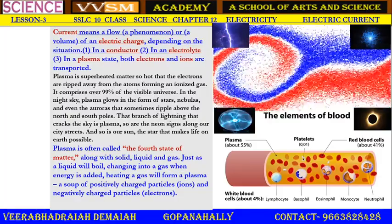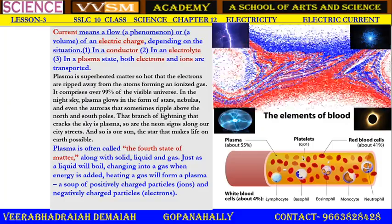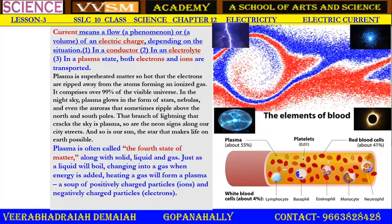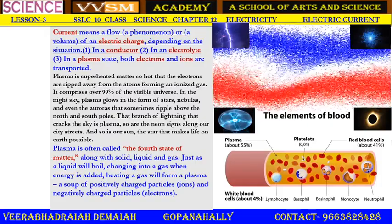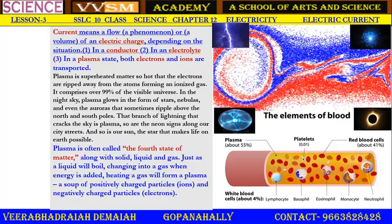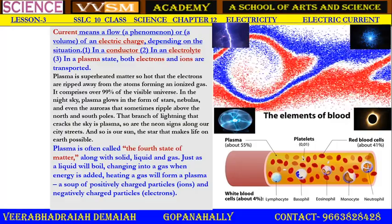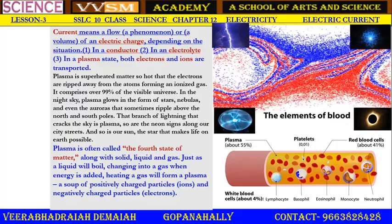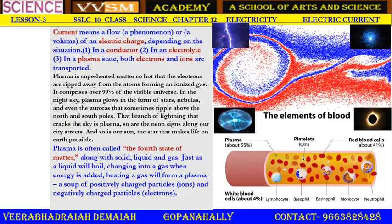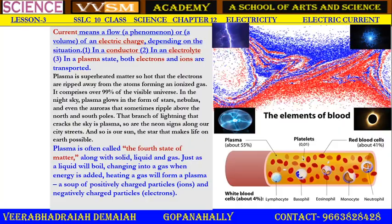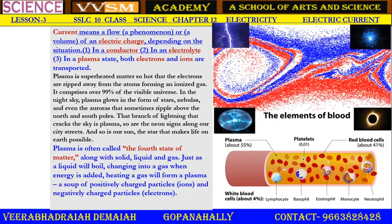Plasma comprises over 99% of the visible universe. In the night sky, plasma glows in the form of stars, nebulae, and even the auroras that shimmer above the north and south poles — the Milky Way galaxy, the cosmos. That branch of lightning that cracks the sky is plasma. So are the neon signs around our city streets — it is nothing but plasma state of matter. And so is our sun, the star that makes life on earth possible.